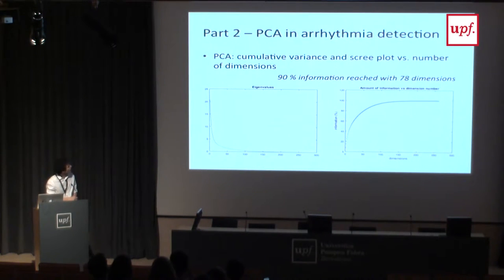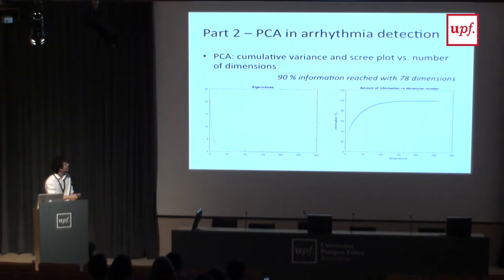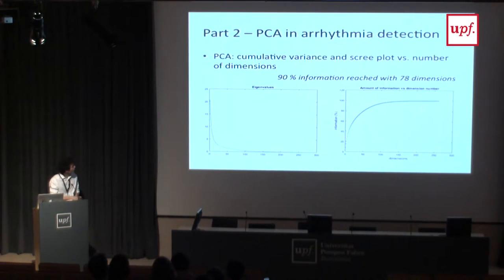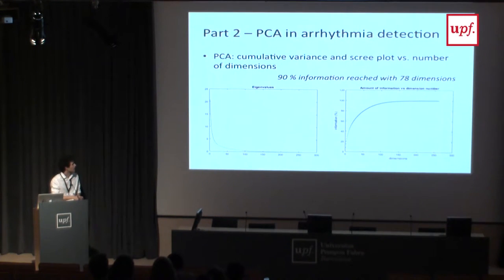Here we have the scree plot — the eigenvalues over the dimensions. The first principal component has the highest eigenvalue. As we increase the dimension, the eigenvalues go down and approach zero, meaning the additional dimensions are not effectively contributing to the problem.